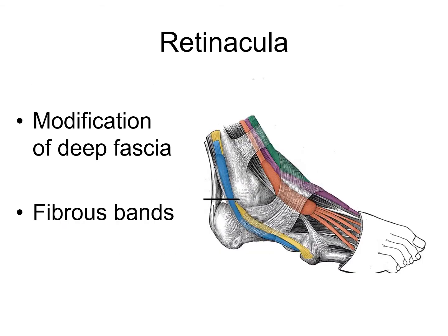Retinacula are modifications of deep fascia. The deep fascia thickens to form strong fibrous bands which are known as retinacula. Their main functions are to retain the tendons in place and to prevent their bow stringing during movements.